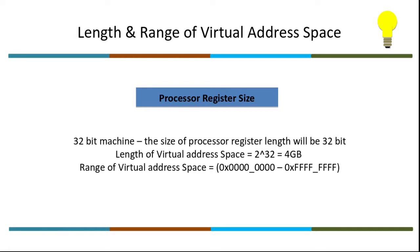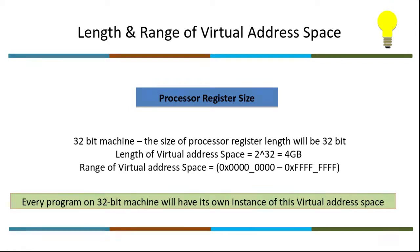The linker has this entire address range to associate to program symbols. Every program will have its own instance of this address space, in which the linker associates the program's code and data.